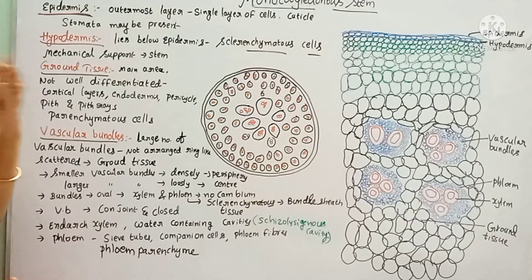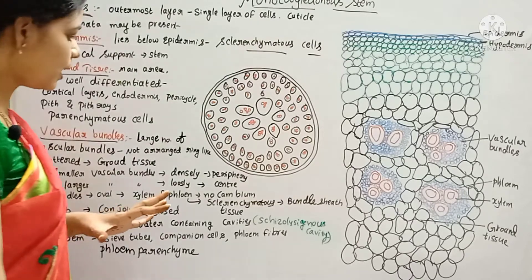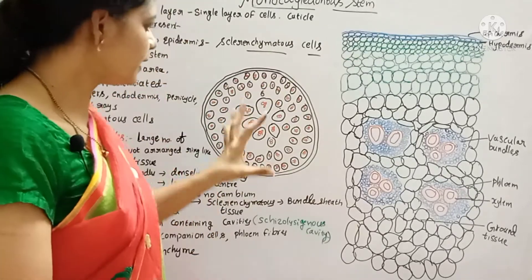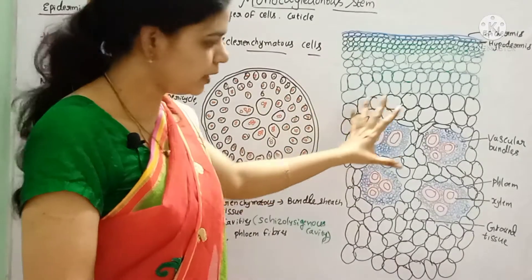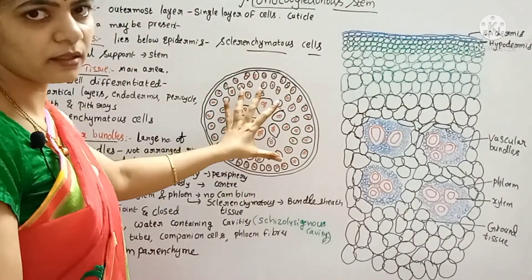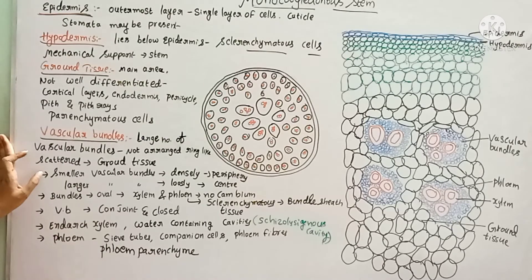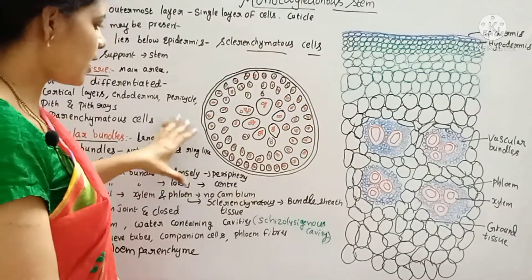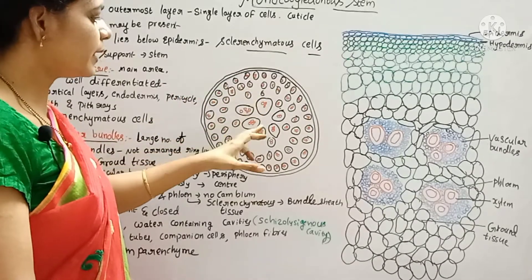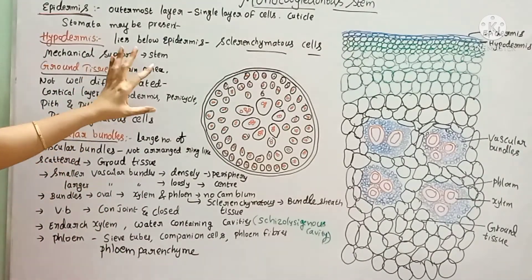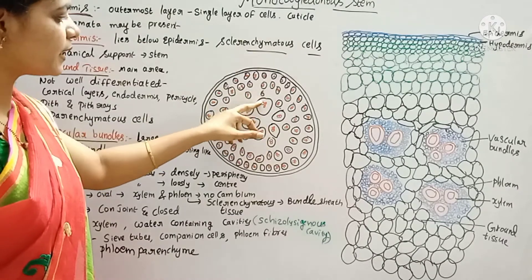There are a large number of vascular bundles in the monocot stem. These vascular bundles are different from dicot stem — they do not have a neat ring-like pattern; instead they are scattered in an irregular pattern. Smaller sized vascular bundles are found towards the periphery, and large sized vascular bundles are found towards the center. Each vascular bundle is oval-shaped.